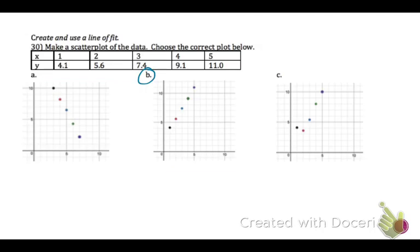On number 30, we're asked to make a scatter plot of the data, and we're going to choose the correct plot below. So we're just going to start with our points, and we're going to look at point 1, 4. So right away, I can see that I can eliminate A, because I don't have a point around there. B, I can keep in the running, and C as well. So now I'm going to look for the point 5, 11. So 5, 11, this looks good here. Actually, graph C has the point 5, 10. So I'm going to check the remaining points: 2, 5.6, and yes, that's about in the right location, 3, 7.4, yes, and 4, 9.1. So check the location of the points and the graph that has them in the right spot. That is your answer, which is choice B.